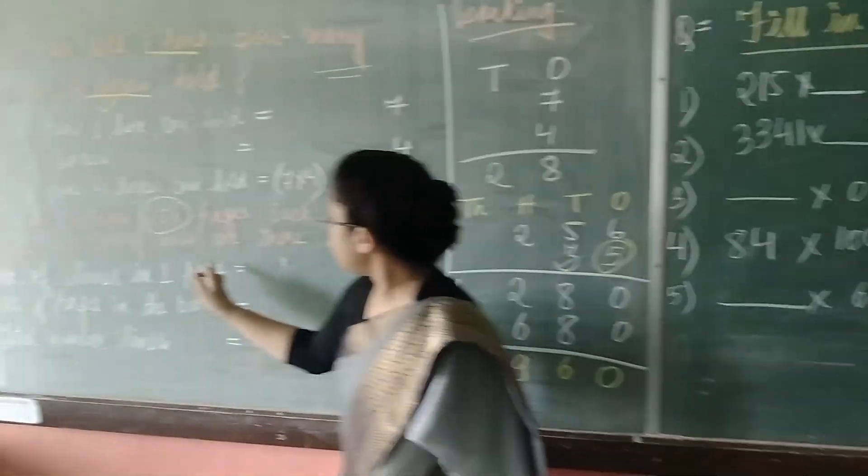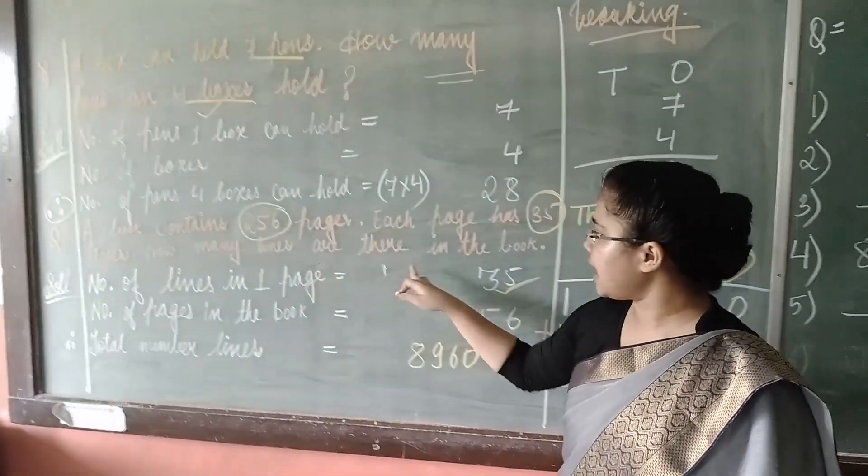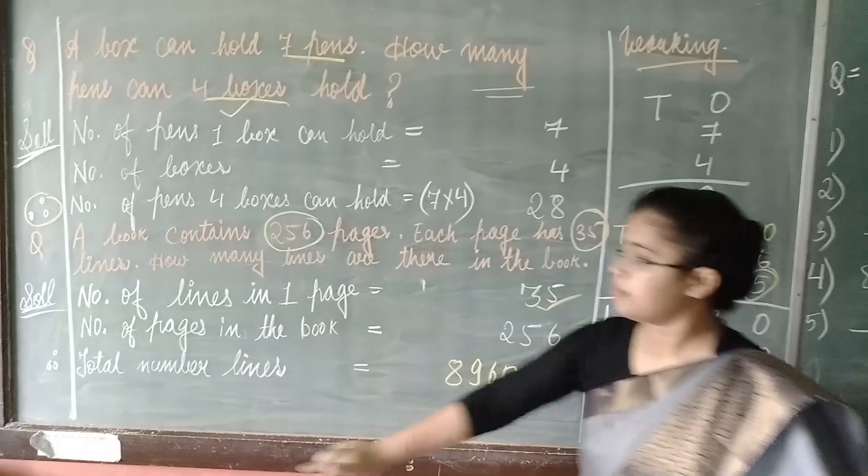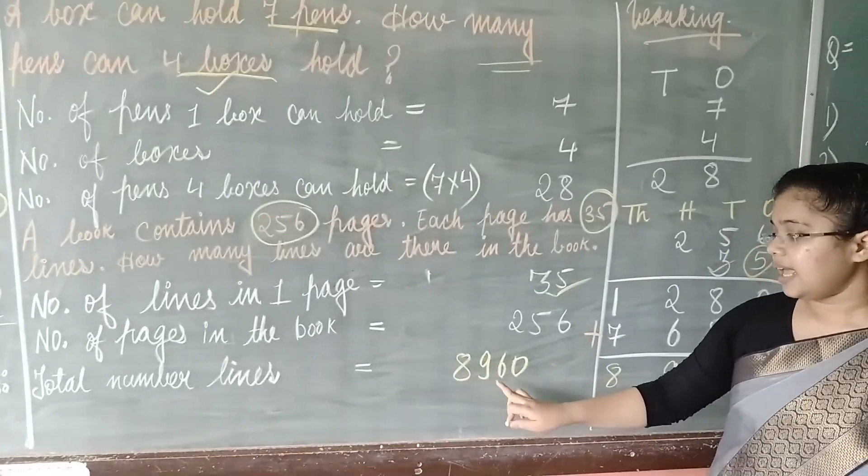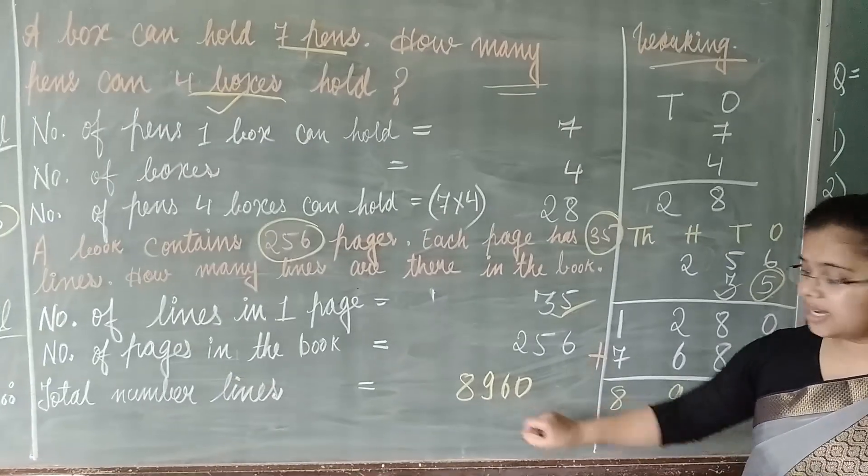So, you are asked, how many lines are there in that book? Total number of lines. That is, 8,960.